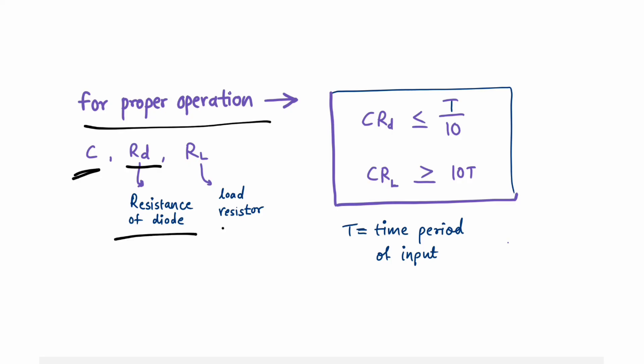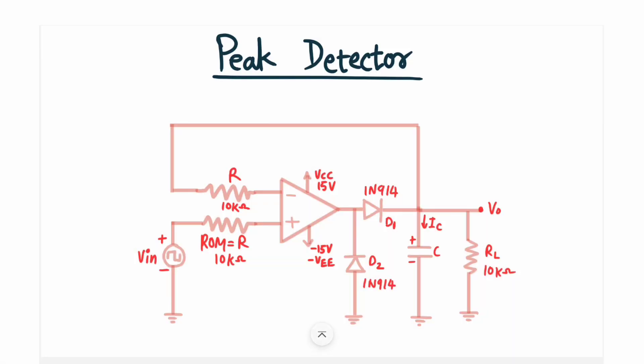For proper operation you need to follow these equations: C is the capacitor value, Rd is the resistance of the diode, RL is the load resistor, and T is the time period of your input. The product C × Rd should be less than T/10, and C × RL should be greater than 10 × T. In short, the value of Rd should be low and the value of RL should be high.